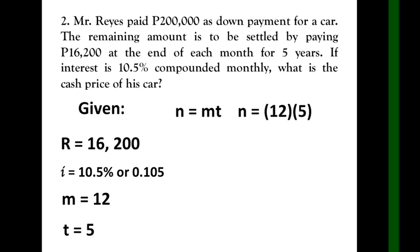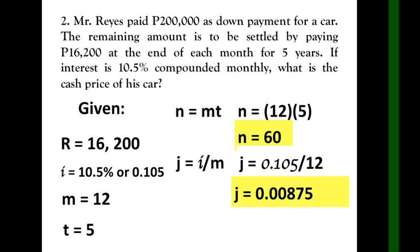For n, we have mt: 12 times 5, and the answer is 60. For j, we have i over m: 0.105 divided by 12, and that is 0.00875.